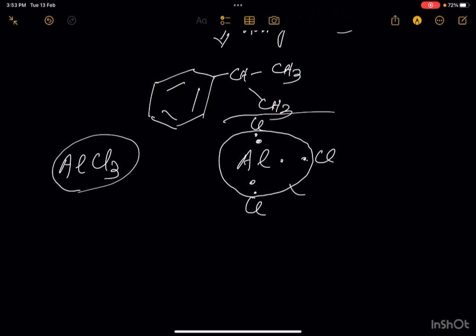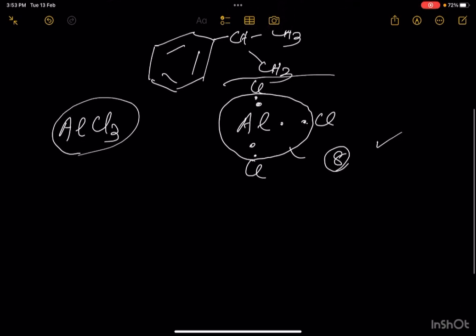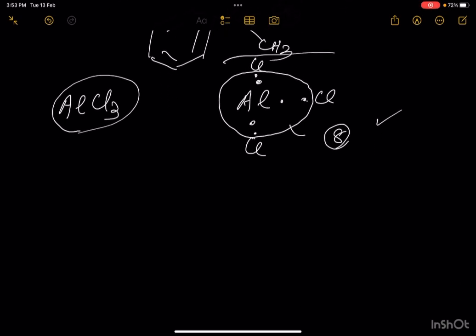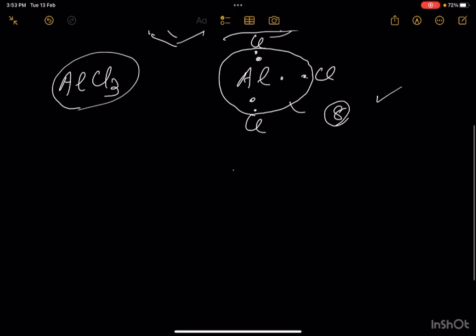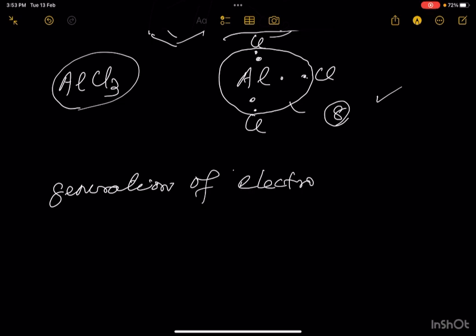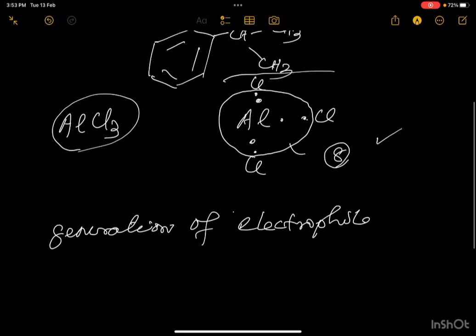Usually, an atom should have 8 electrons in its outermost shell during compound formation. But here, AlCl3 is an electron-deficient compound with only 6 electrons. Now let us discuss the generation of electrophile for the above process.